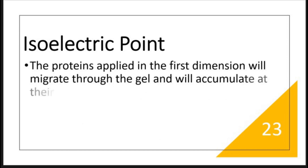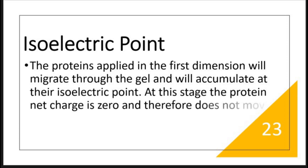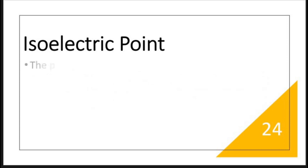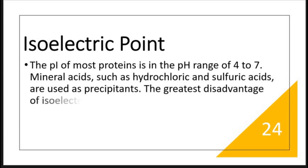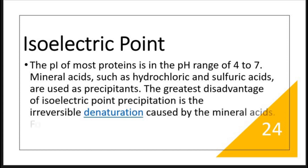The protein migrates through the gel and accumulates at its isoelectric point. At this stage, the protein net charge is zero and therefore it does not move in the electric field. The isoelectric point typically falls in the range of 4 to 7.